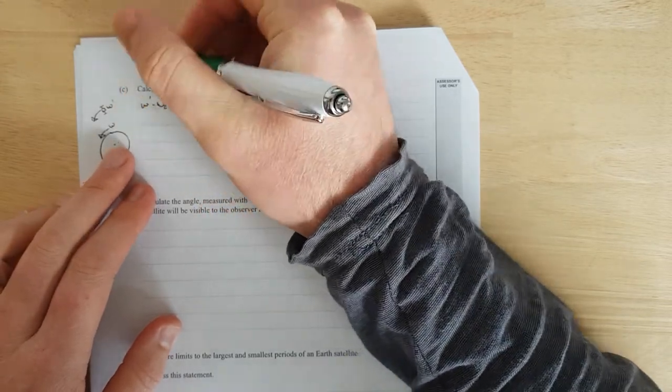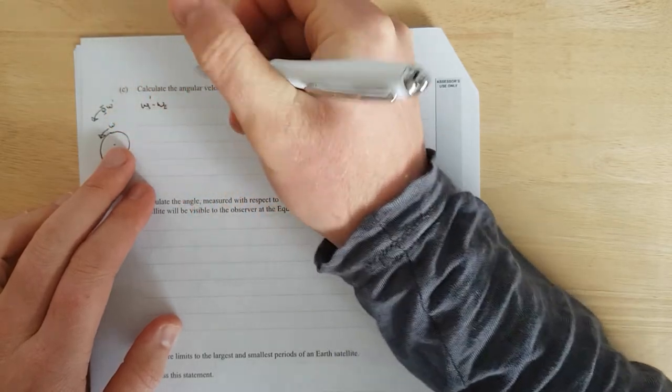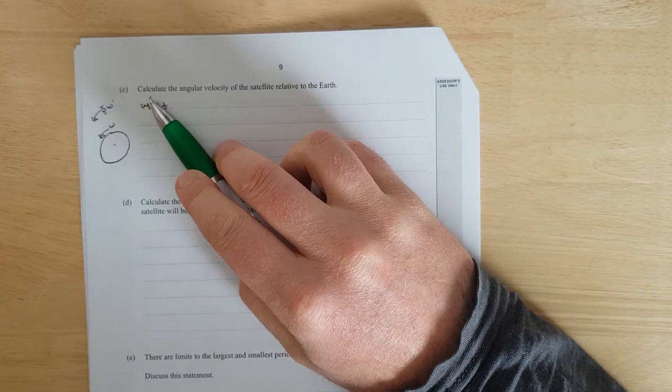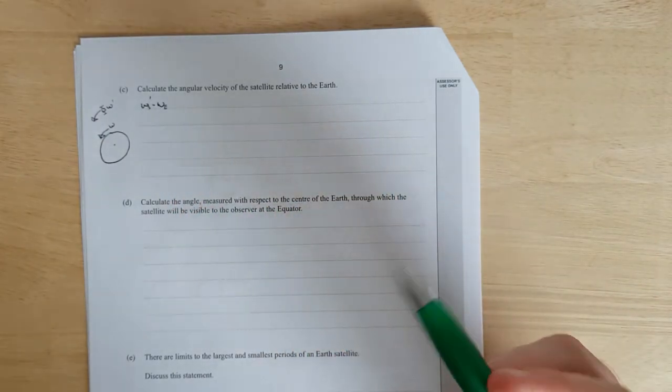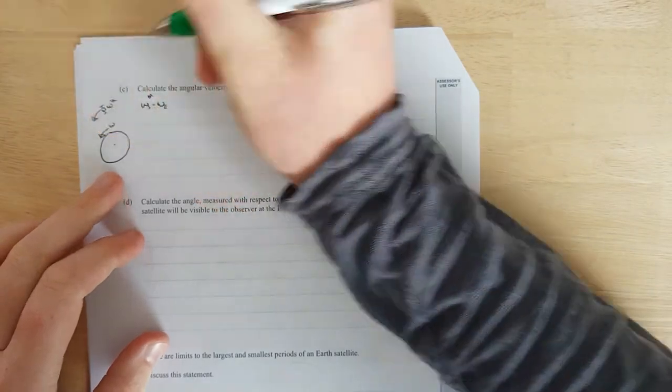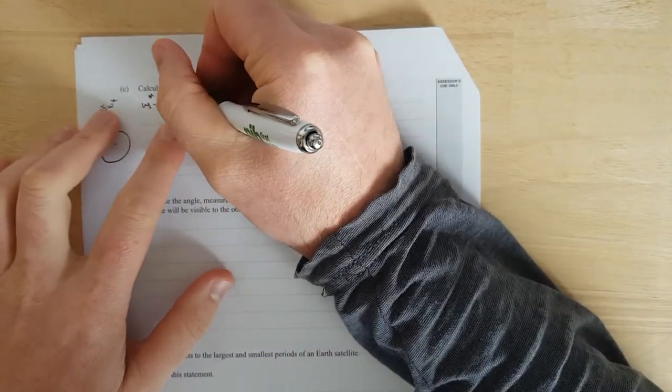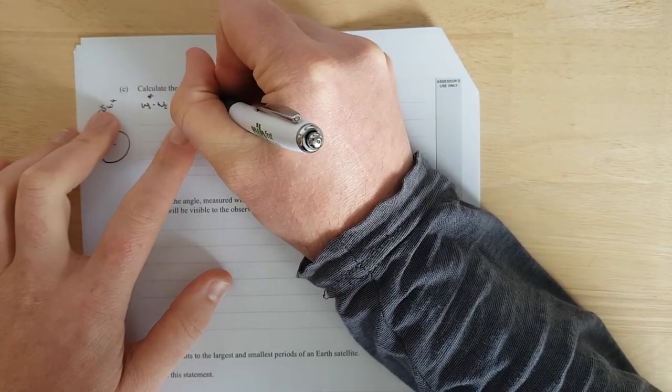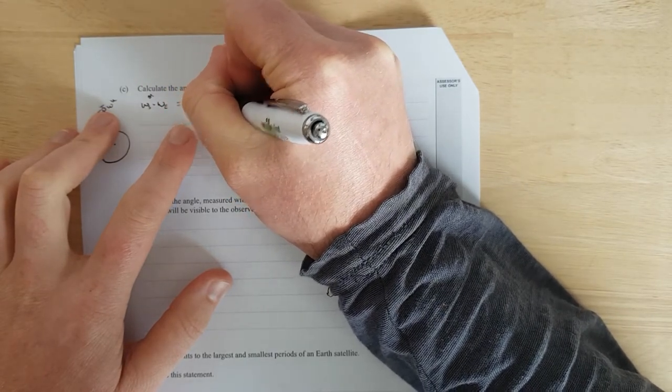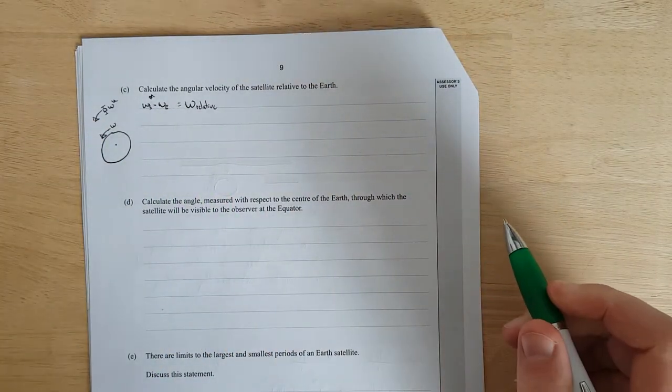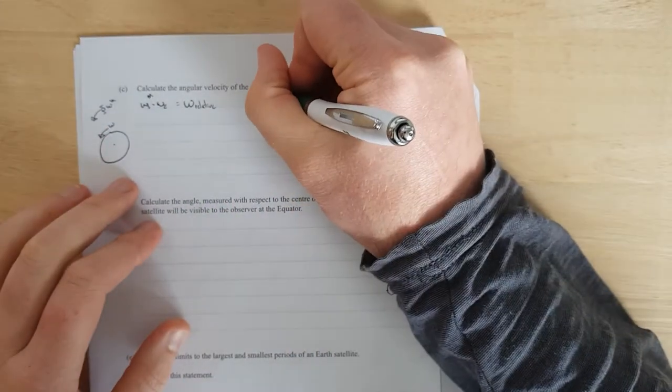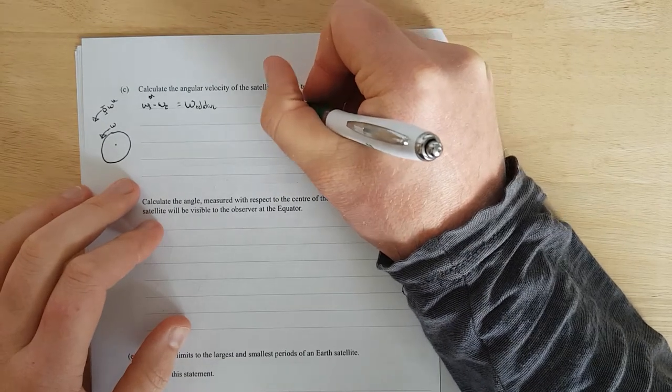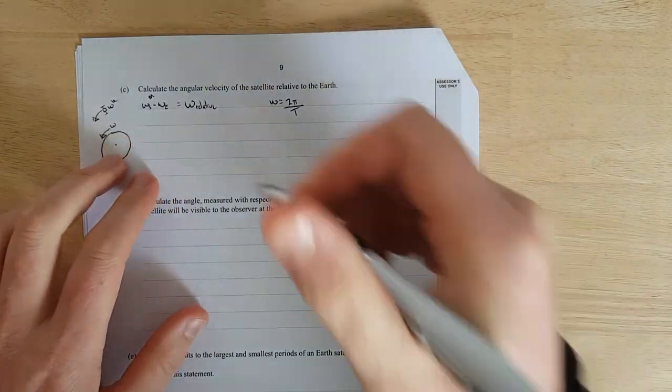So we have the angular velocity of the satellite, minus the angular velocity of the Earth. I'm going to just chuck away subscript E for Earth, and then subscript S for satellite. I just did that prime because this is not, maybe I'll get rid of that prime. It's a little bit unnecessary. And that is going to be equal to the angular velocity relative, relative to, of the satellite to the Earth. And just remember that angular velocity is equal to, it would be equal to 2πf, but it's equal to 2π divided by the period, because we're dealing with periods.